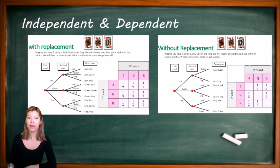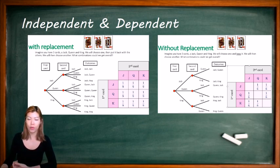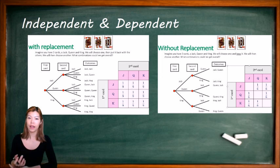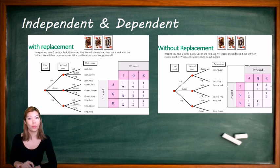When we talk about something that we replace — for example, we pick up a card and then put it back and pick up a second card — the second card we pick is not affected by the first card, and we say that these are independent events. Whereas when we pick a second card but kept the first card, the second card will be affected by whichever card we picked first. So we call this dependent events.